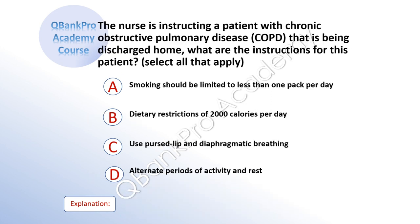The nurse is instructing a patient with chronic obstructive pulmonary disease, COPD, that is being discharged home. What are the instructions for this patient? Select all that apply. A, smoking should be limited to less than one pack per day. B, dietary restrictions of 2000 calories per day. C, use pursed lip and diaphragmatic breathing. D, alternate periods of activity and rest.